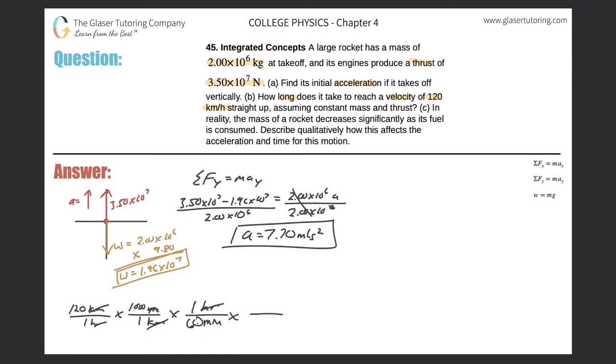The hours cancel. Now I got to get rid of minutes, so minutes in the numerator and seconds in the denominator. There's 60 seconds in a minute. Great. So now take 120 times a thousand and then divide it by essentially 3600. So it's 33.3 meters per second.